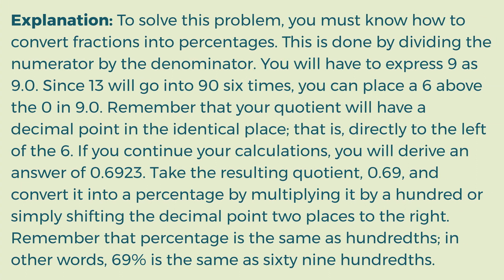Explanation. To solve this problem, you must know how to convert fractions into percentages. This is done by dividing the numerator by the denominator. You will have to express 9 as 9.0. Since 13 will go into 9 six times, you can place a 6 above the 0 in 9.0. Remember that your quotient will have a decimal point in the identical place, that is, directly to the left of the 6.